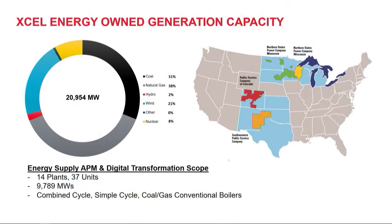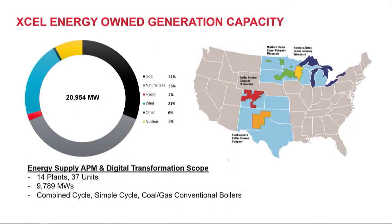Specifically in energy supply, in our power plants — that's the business unit I'm in and what I'll be talking about today. We've narrowed our scope to some of our key plants and units: 14 plants, 37 units, about 10,000 megawatts. That consists of combined cycle, simple cycle, and our conventional fleet. Today I'm not going to talk about nuclear or transmission. However, this whole effort really is an enterprise-level effort, and we do have GE APM implementation going on in those other business areas as well.